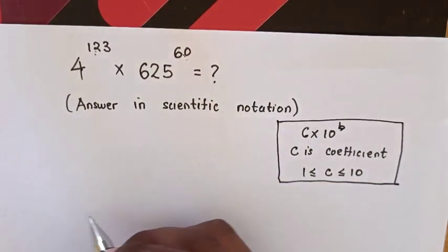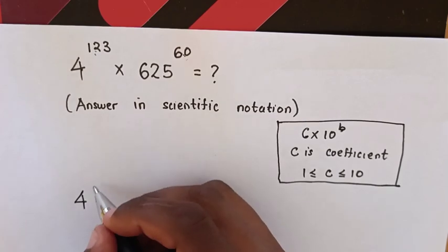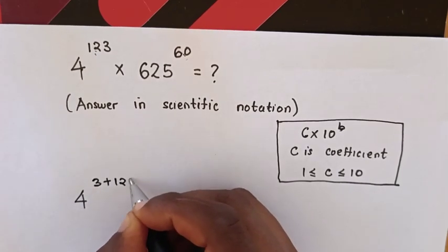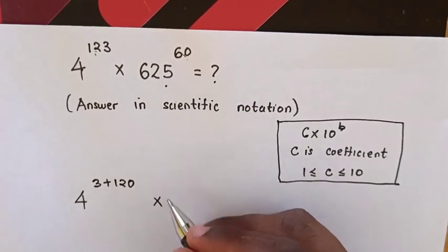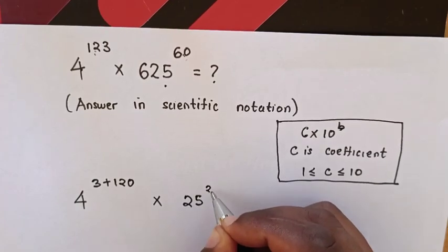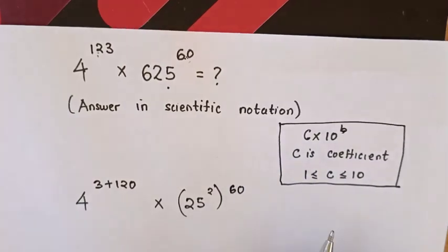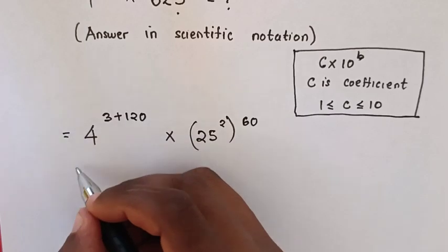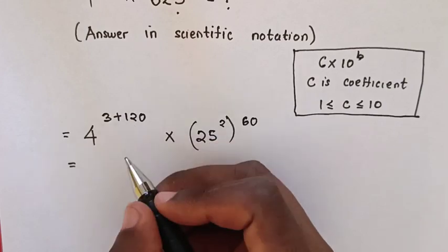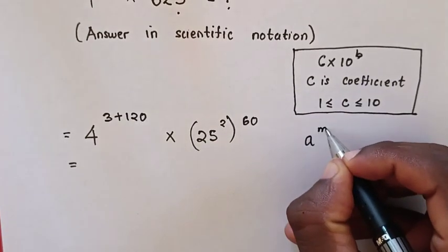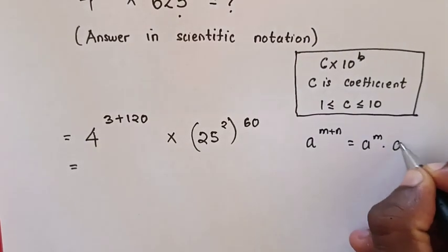So, 4 power of 123 is the same as 4 power of 3 plus 120, times 625, which is the same as 25 squared. This will be equal to 4 power of 3 plus 120. We will apply the exponential rule, which is A power of M plus N equals A power of M times A power of N.